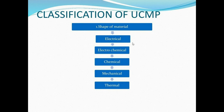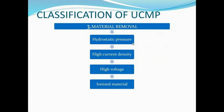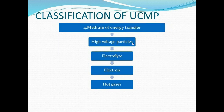The second criterion is the mechanism involved: erosion, ionic dissolution, and vaporization. The third is the source of energy required for material removal: hydrostatic pressure, high current density, high voltage, and ionized material. The medium of energy transfer includes high voltage particles, electrolyte, electrons, and hot gases — used in different types of machines. Some machines use high voltage particles, some use electrolyte, some use electrons, and some use hot gases.